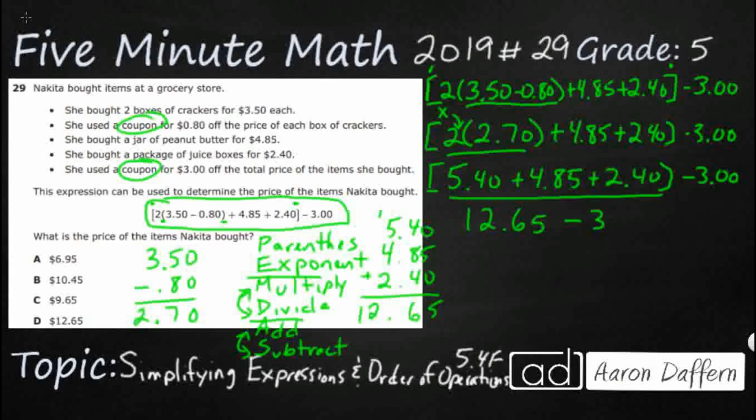12.65 minus 3. Finally, we'll drop the brackets. We can do our minus 3. And let's just subtract 12 minus 3. That is going to make 9.65. 9 dollars and 65 cents. Our answer is C.